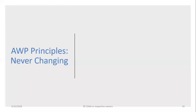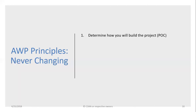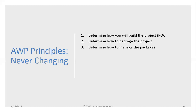The first principle of advanced work packaging is that regardless of what you're trying to build, you have to determine how you're going to build the project — that comes down to the path of construction. Whether you're building something in your backyard or a several billion dollar facility, the first step is figuring out how you're going to build it. The next step is determining how you're going to package it — construction work packages and engineering work packages — though on very simple projects it may just be drawings or a list of materials.